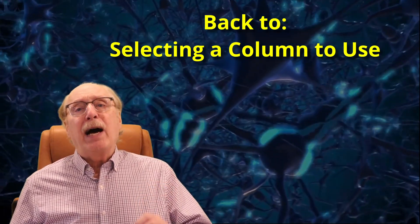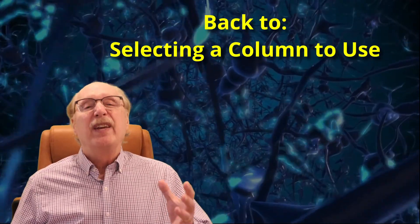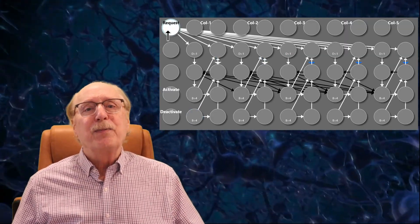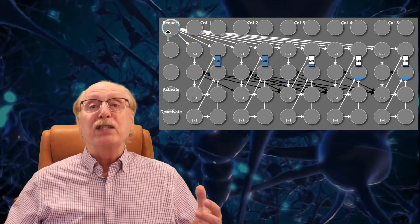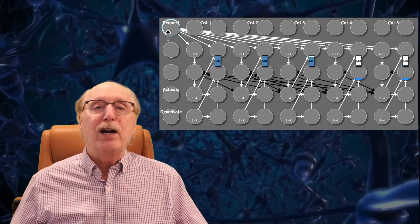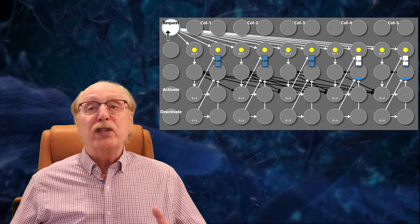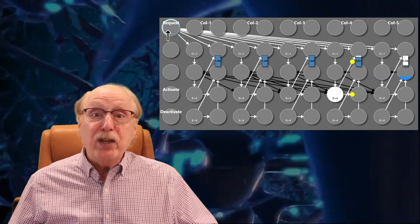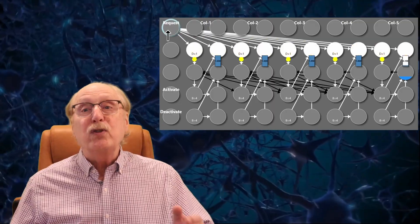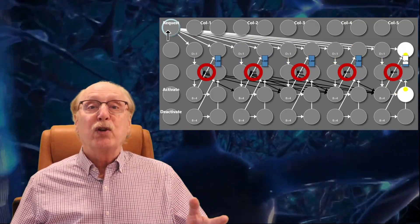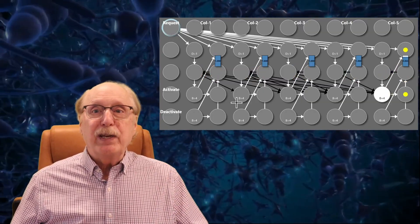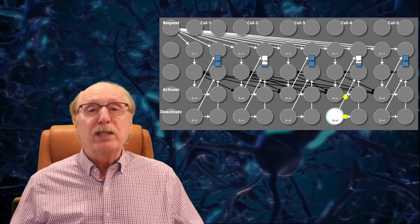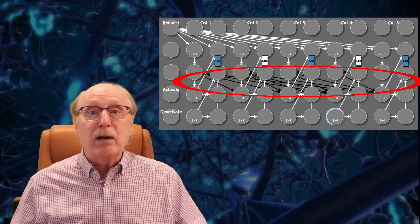Now back to the big question: how does the brain choose which available column to use? When the request signal comes in — imagine it comes from the hippocampus — it has to activate the first available column and suppress all the others. This happens through a clever combination of timing and inhibition. First, the request signal is routed so that all columns receive it at the same time. Then each column checks its own in-use synapse. If the synapse says the column is already in use, the signal gets blocked by an inhibitory synapse shown in black in this simulation. If the column is available, the signal propagates onward — and here's the clever part: once that happens, the column immediately triggers a suppressive cascade, inhibitory synapses that block other columns from activating.